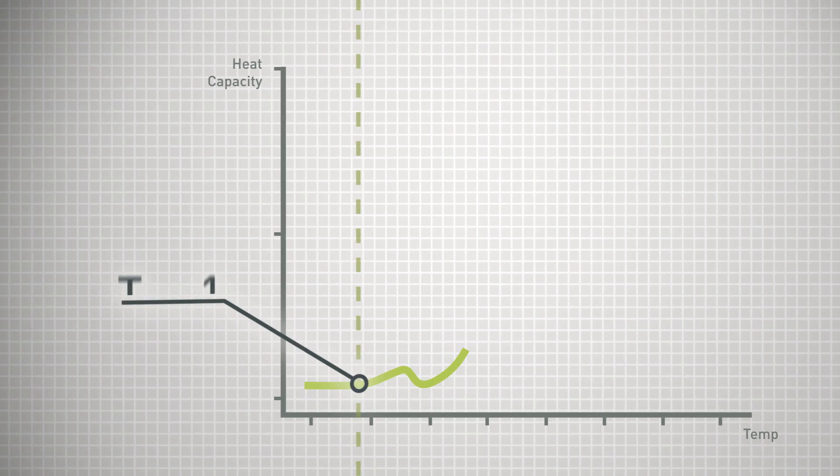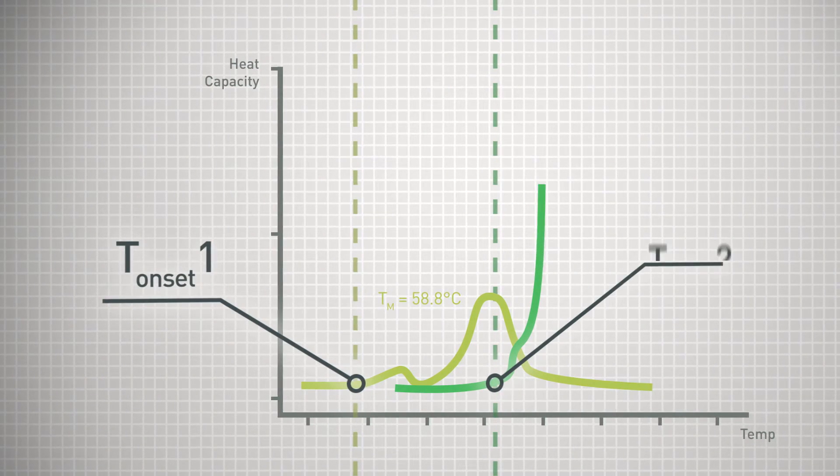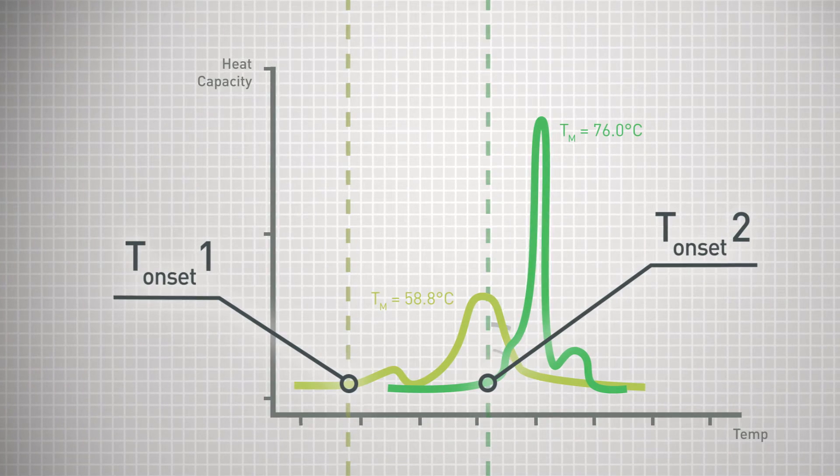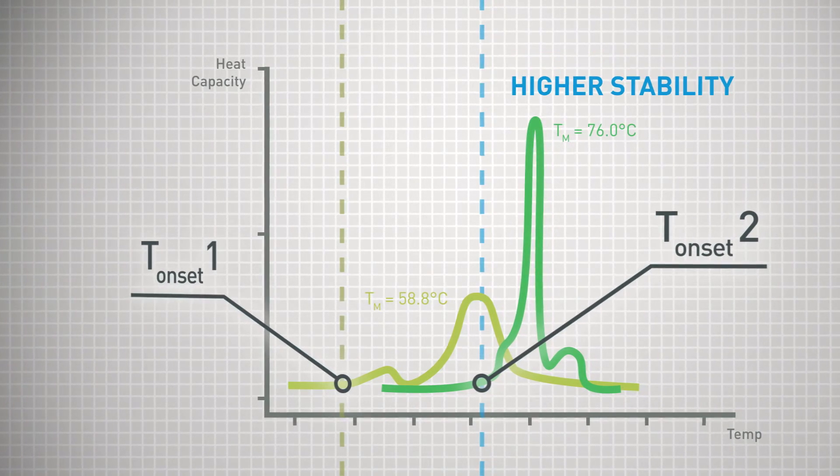This includes T onset, the temperature where the heat capacity begins to change. The higher the T onset, the higher the stability.